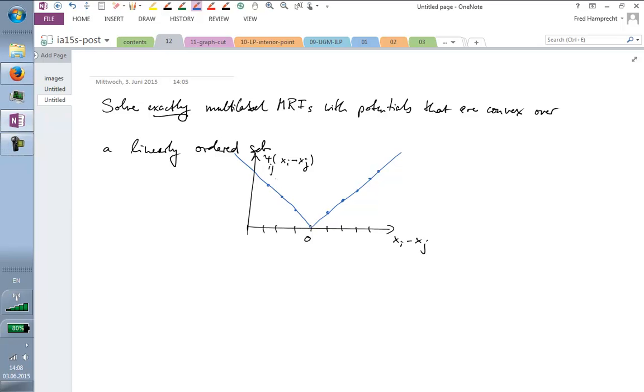So if I'm taking the absolute difference, this would be convex. Or if I'm taking a parabola here, this would be convex. Or if I'm taking a line which is linear, but with a slope that increases over distance, that would also be convex. So all of these are convex. They have in common that you can see the bottom of the pit from wherever you stand on the curve.